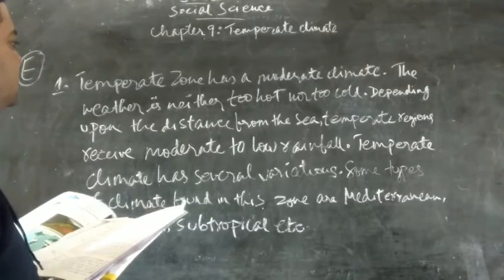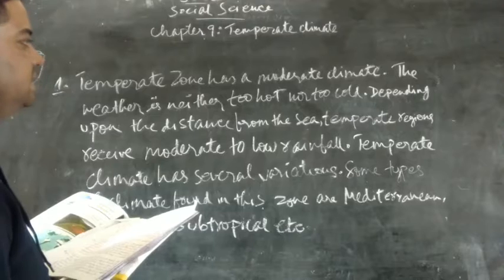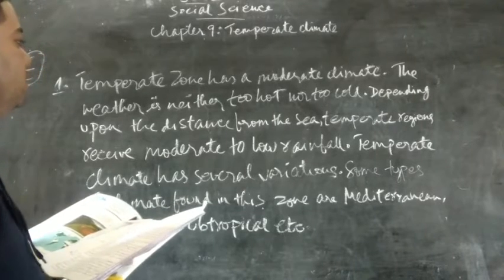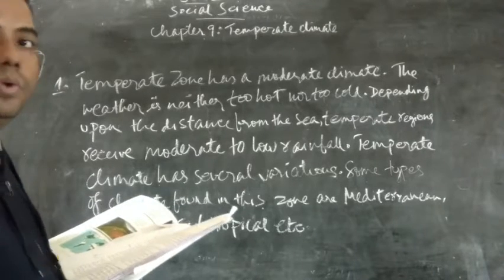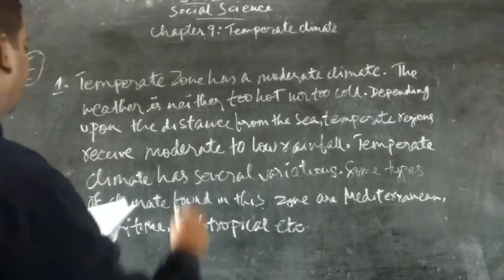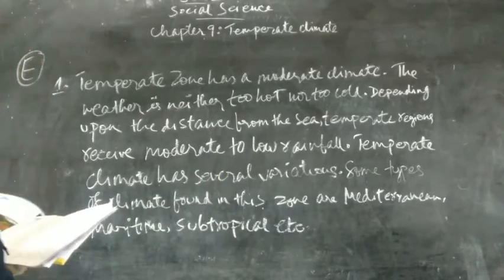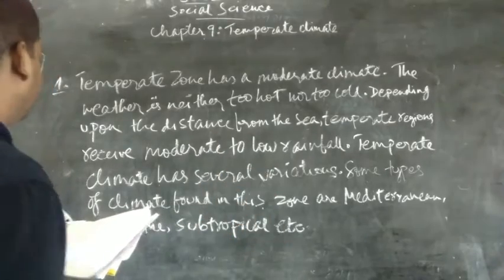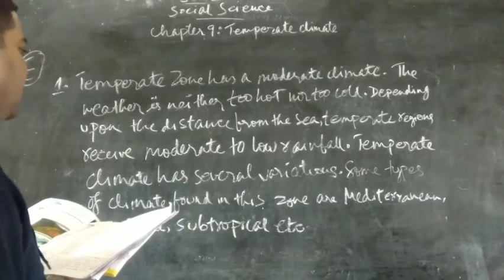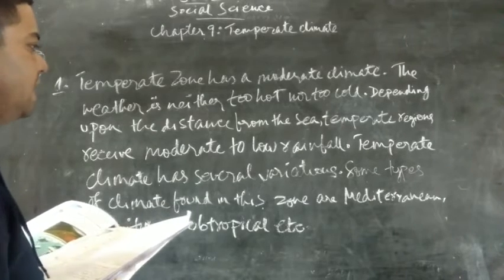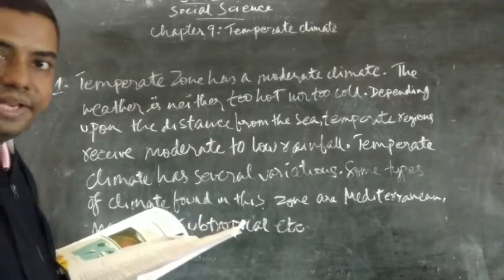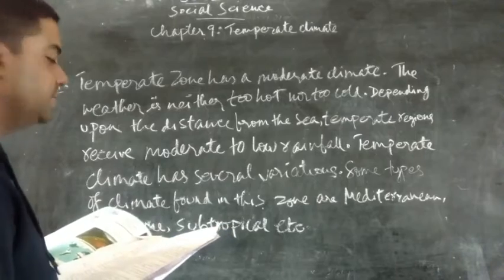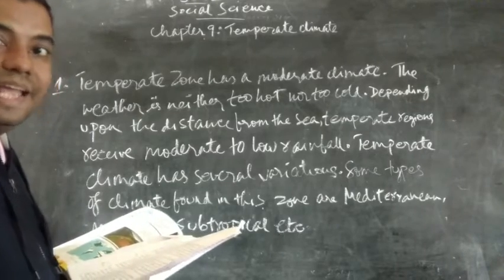Depending upon the distance from the sea, temperate regions receive moderate to low rainfall. Temperate climate has several variations. Some types of climate found in this zone are Mediterranean, maritime, subtropical, etc.